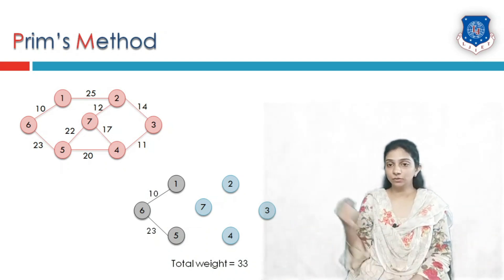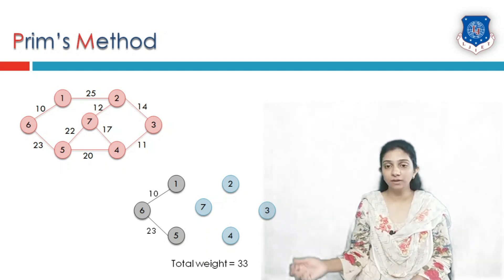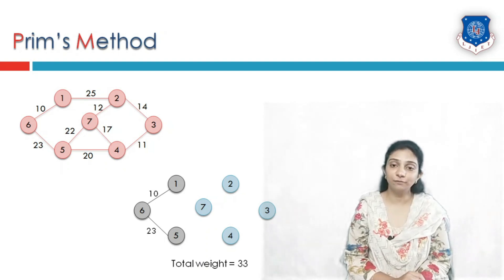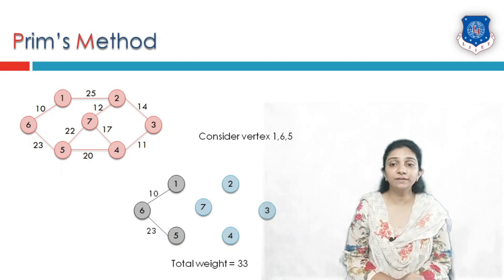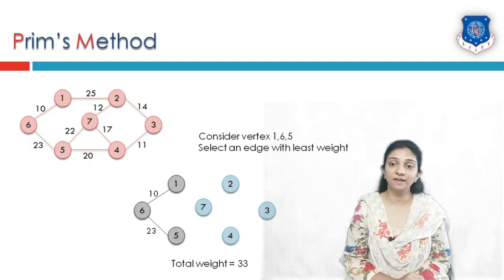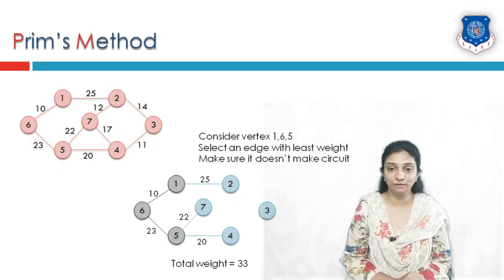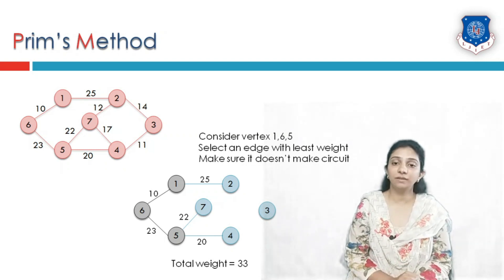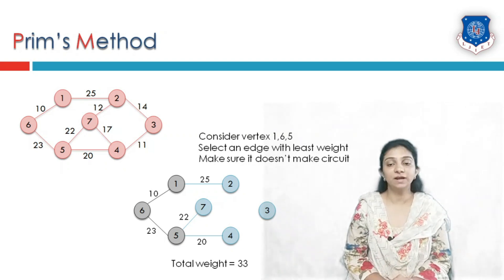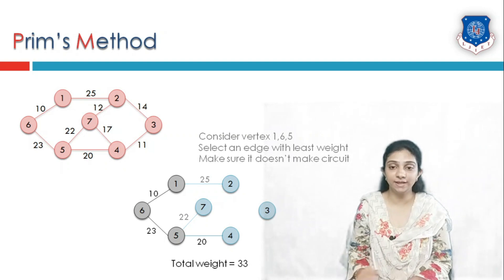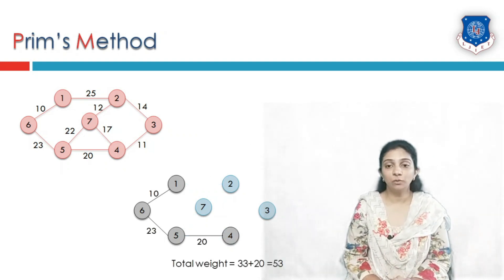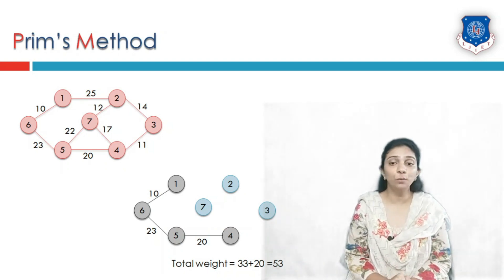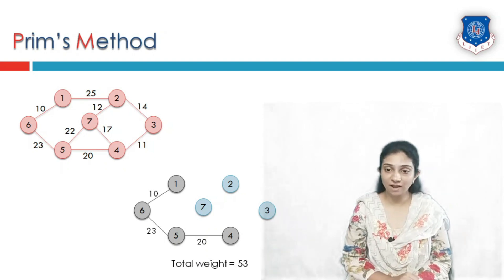Now we consider vertices 1, 5, and 6, and find all edges associated with them. The candidate edges have weights 25, 22, and 20. We select only the edge with weight 20 and reject the remaining edges. The tree weight is now 10 plus 23 plus 20, equal to 53.